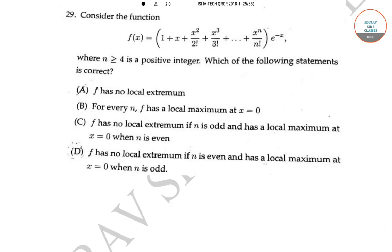The next question: consider the function f(x) = (1 + x + x²/2! + ... + xⁿ/n!) · e^(-x), where n ≥ 4 is a positive integer. Which of the following statements is correct? To make calculations easier, let us define Eₙ as 1 + x + x²/2! + ... + xⁿ/n!.